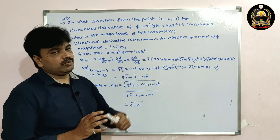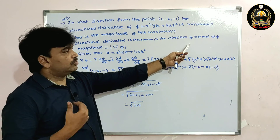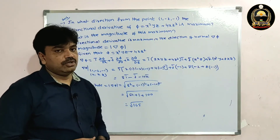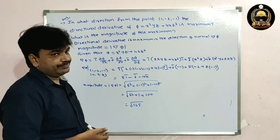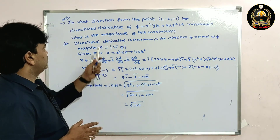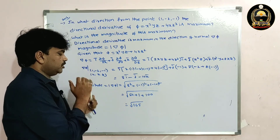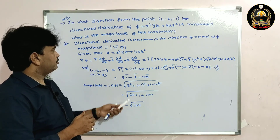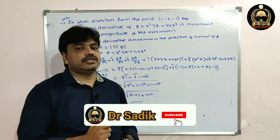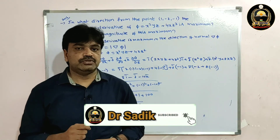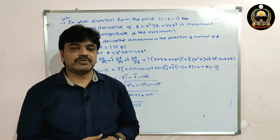So the directional derivative is maximum in the normal direction, which is del φ. The magnitude of del φ, that is modulus del φ, gives the maximum value. Simply find del φ and apply the modulus to get the maximum magnitude. Please subscribe to this channel, like and share this video. Thank you for watching.